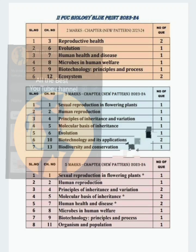Moving on to 5 marks. Chapter number 1, Sexual Reproduction in Flowering Plants — 1 question. Chapter number 2, Human Reproduction — 1 question for 5 marks. Chapter number 4, Principles of Inheritance and Variation — 2 questions for 5 marks. Chapter 5, Molecular Basis of Inheritance — 2 questions for 5 marks. Chapter 7, Human Health and Disease — 2 questions for 5 marks. Chapter number 8, Microbes in Human Welfare — 1 question. Chapter number 9, Biotechnology Principles and Processes — 1 question. Chapter number 11, Organism and Population — 1 question for 5 marks.